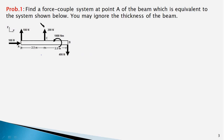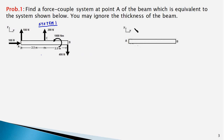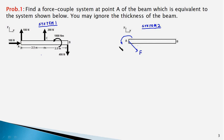This is system 1, and system 2, which we have to determine, is sketched here. Under system 2, we have a force-couple system acting at point A — that is, a force F and a couple of moment M_A. We have to determine the magnitude and direction of this force and the moment of this couple.